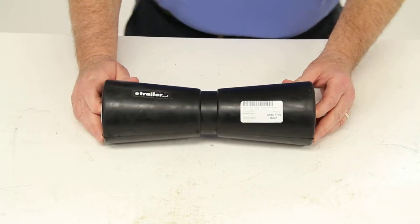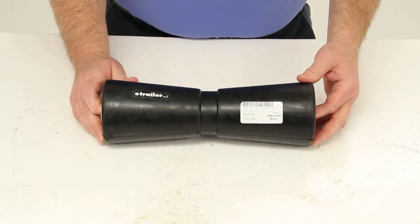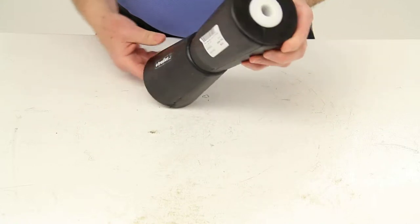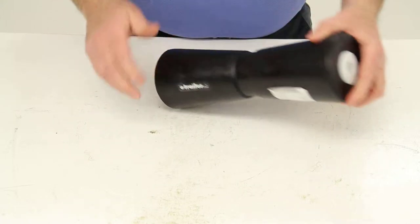This keel roller is constructed of a heavy-duty rubber compound. It does include heavy-duty nylon bushings on both ends.